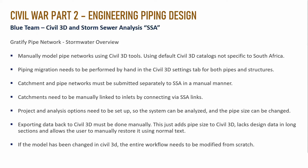Before sending all of this data to SSA, a piping migration is required. This is performed by hand inside Civil 3D's settings tab for both pipes and structures — you literally need to go and assign each element to a specific migration. For example, a pipe is a pipe, an inlet is an inlet, a manhole is a manhole, a junction is a junction. It's a very tedious process but that's how it was done in the old days.